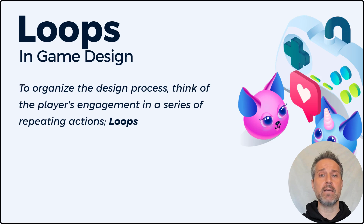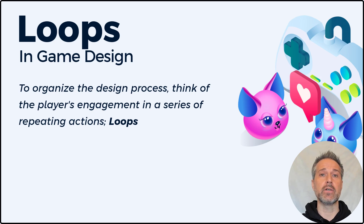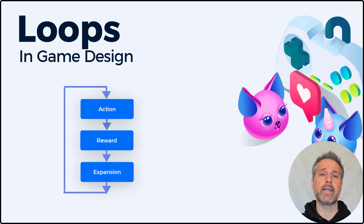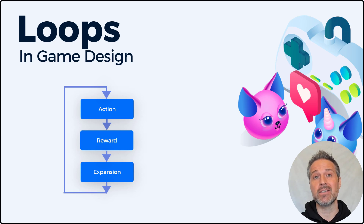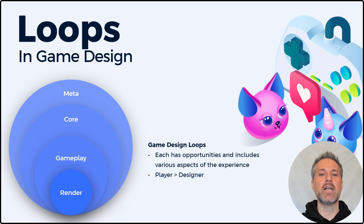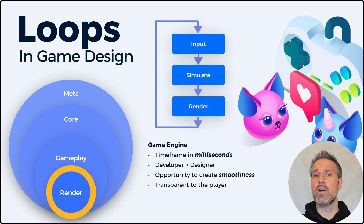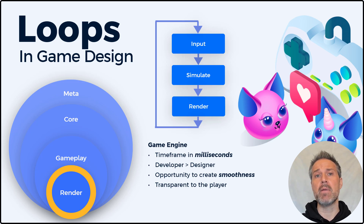You may be familiar with the term core game loop, which is just one of a series of repeating actions that the players will go through. In its simplest form, we have action, reward, and expansion. Let's think of a classic game like Pac-Man. The user inputs the direction they're going to move — that's the action. The reward is picking up points as they go along, occasionally getting those power pellets, which give them temporary invulnerability, expanding their abilities as a player. The game engine's render loop renders often in milliseconds — this is more important for developers to think of than designers, but there's an opportunity to create smoothness and responsiveness in your game at this level.